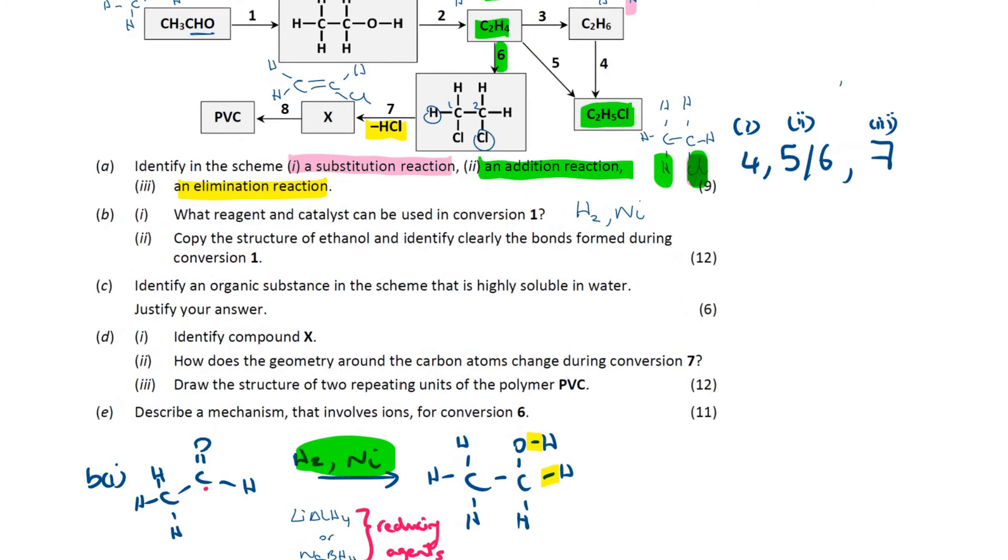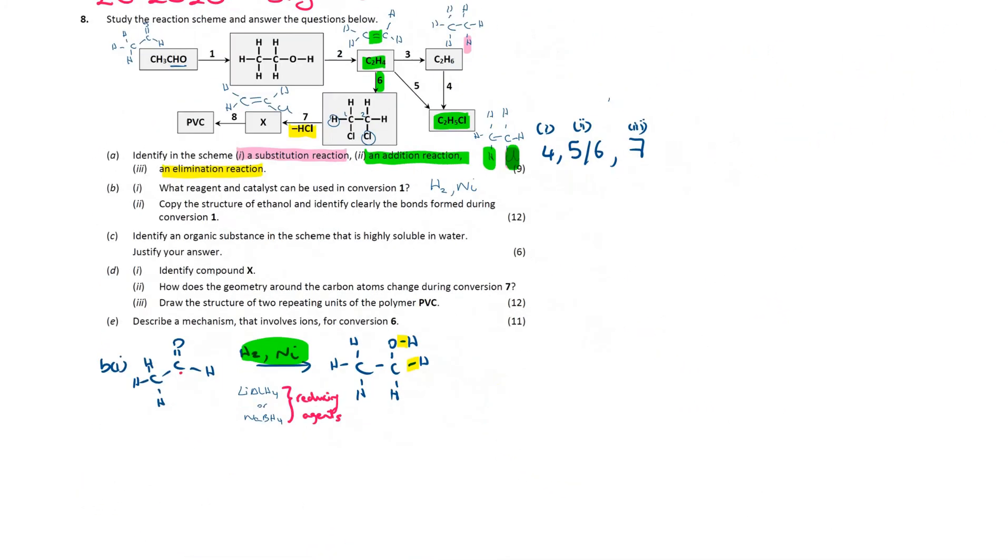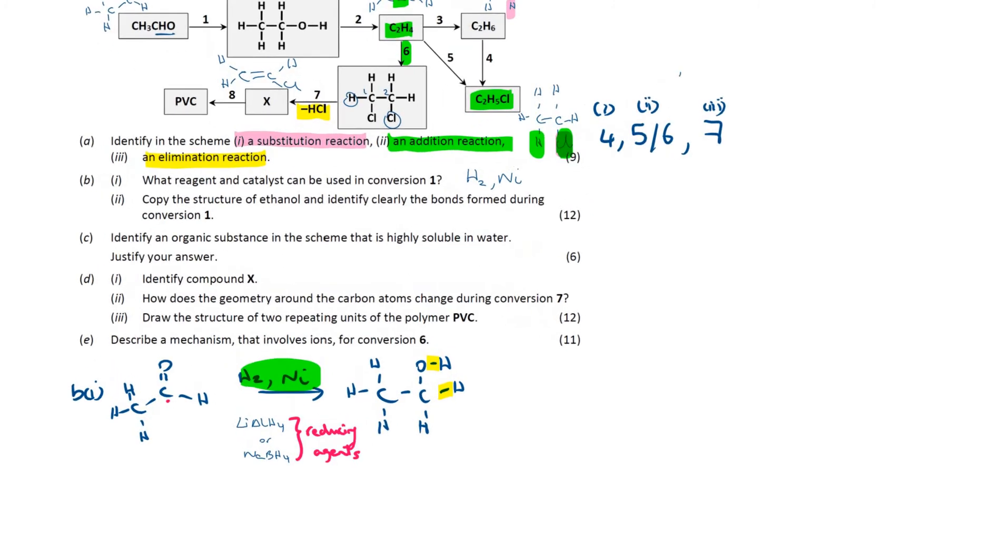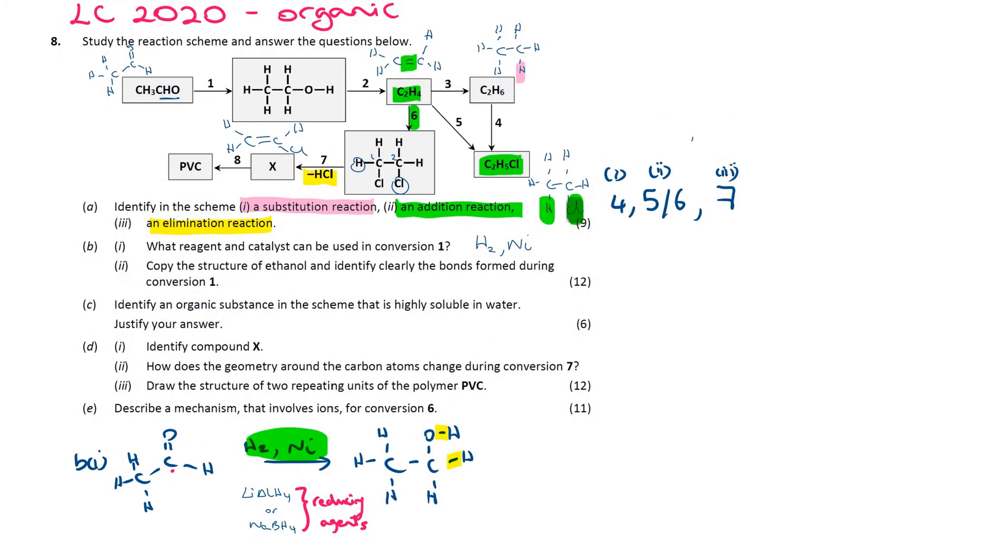Next, identify an organic substance in the scheme that is highly soluble in water. When it comes to solubility in organic chemistry, we always talk about like dissolves like. Water we know is a very polar solvent. That means it dissolves things that are quite polar, but it's very good at dissolving things. It won't dissolve things that are very non-polar, like oil and a lot of the organic molecules that are non-polar. So, when I'm looking for something to be highly soluble in water, I want something with the same intermolecular force as water. So, anything that can hydrogen bond to water here will be very soluble.